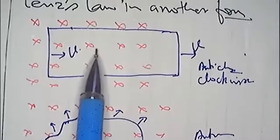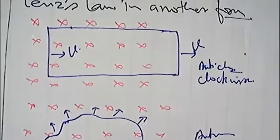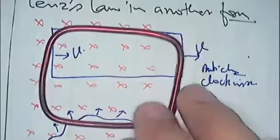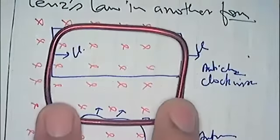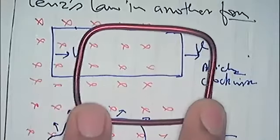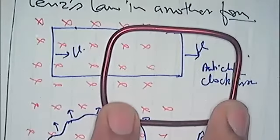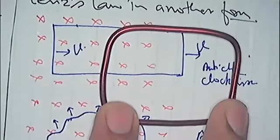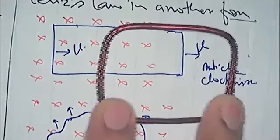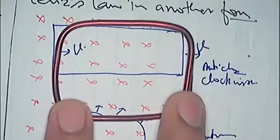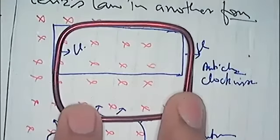In this case, this loop is coming out of magnetic field with constant speed v. So what can you say about the magnetic flux linked with the loop? What can you say about the magnetic flux, not magnetic field, magnetic flux?